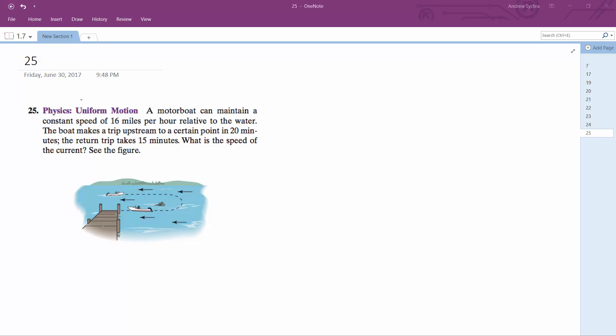We've got a classic problem where a boat travels two ways on a river. It takes 20 minutes to go up, and when it goes back down, it's just 15 minutes.